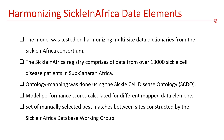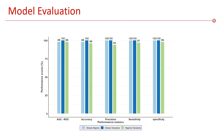Model performance scores were calculated for different mapped data elements, and a set of manually selected best matches between sites was constructed by the SickleInAfrica database working group. Using the manually selected best matches set, the prioritization of matches was evaluated using performance metrics such as area under the curve of receiver operating characteristics, accuracy, precision, sensitivity, and specificity scores. Overall, the model showed very good performance.